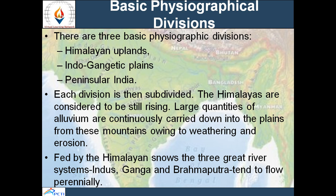There are three physiographic divisions: the Himalayan uplands, the Indo-Gangetic plains, and Peninsular India. The lofty Himalayas are on the north, the Indo-Gangetic plains lie below, and Peninsular India has sea on three sides and land on one side, covering the Deccan Plateau. The Himalayas are fed by rivers like the Ganga and Brahmaputra coming from glacial sources, and because of tectonic movement, the Himalayas are rising considerably. The alluvium carried down by rivers accumulates on the plains, making the Indo-Gangetic plains very fertile.